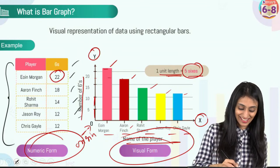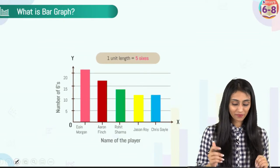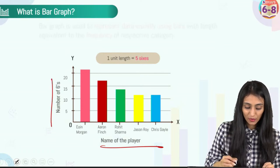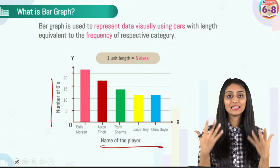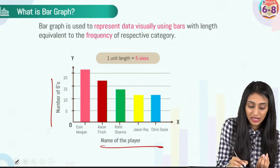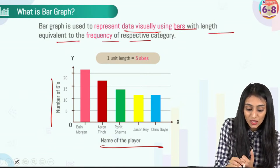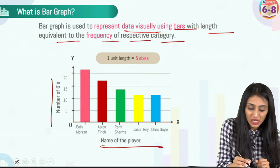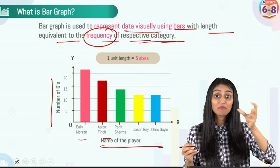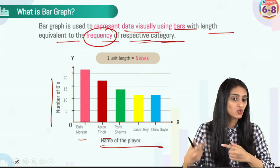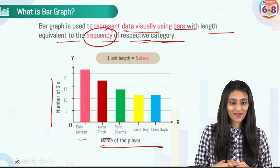So we have understood what a bar graph is. It helps us represent data visually using bars with length equivalent to the frequency of the respective category. For each player, the frequency is the number of times the player has scored a six. On the x-axis we have the categories, and on the y-axis we have the frequency of the data.